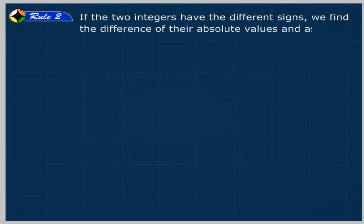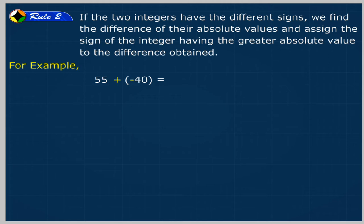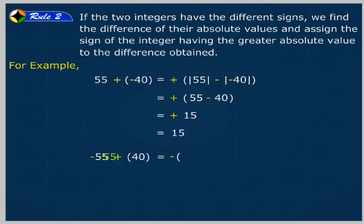Rule 2: If the two integers have different signs, we find the difference of their absolute values and assign the sign of the integer having the greater absolute value to the difference obtained. For example, 55 + (-40) = +(|55| - |-40|) = +(55 - 40) = +15 = 15. And -55 + 40 = -(|-55| - |40|) = -(55 - 40) = -15.